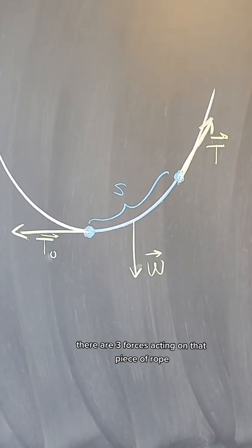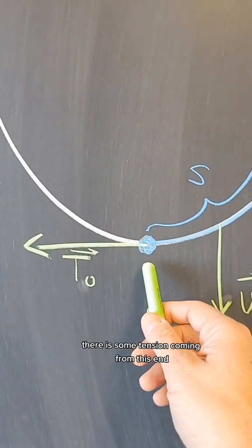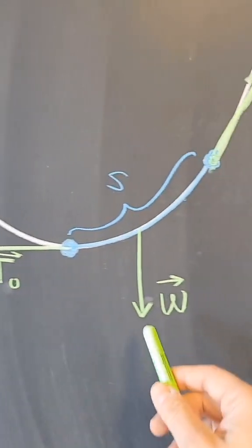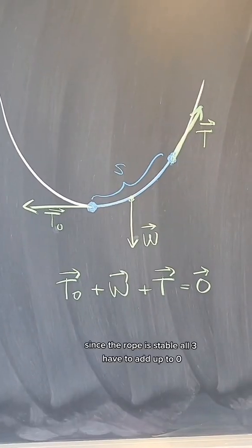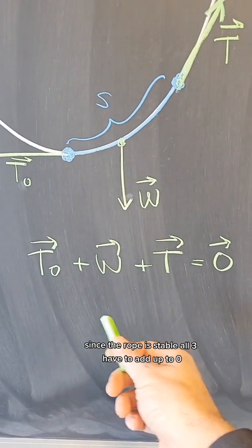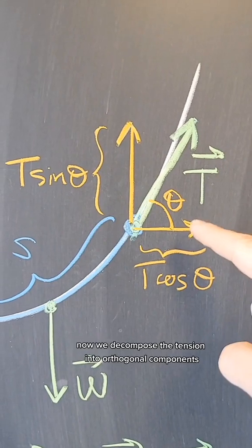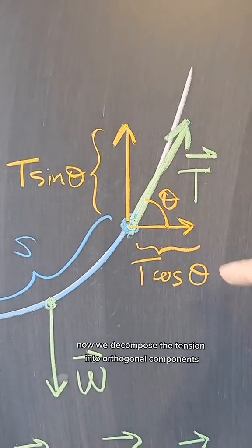There are three forces acting on that piece of rope. There is some tension coming from this end, there is the weight of the rope, and there is tension in that direction. Since the rope is stable, all three have to add up to zero. Now we decompose the tension into orthogonal components.